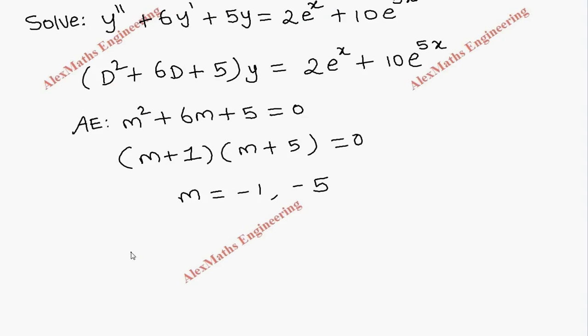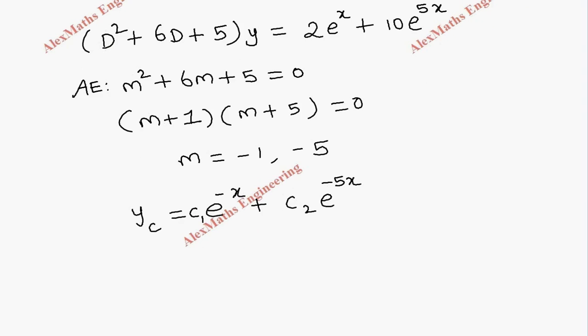Using these two values, we can write the complementary function which is c1 e power minus x plus c2 e power minus 5x. Therefore, the solution set S consists of e power minus x and e power minus 5x.